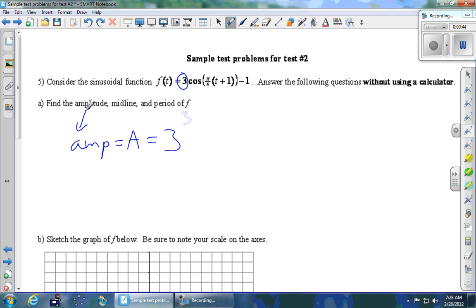Next part we want is the midline. So the midline is the thing that we have been calling k, and it is the thing sitting on the outside. That's the minus 1 in this case. It's okay for midlines to be negative. And that makes sense because cosine normally is centered on the x-axis. And that minus 1 on the outside shifts the whole graph down 1. So it shifts the middle of the cosine down 1 as well.